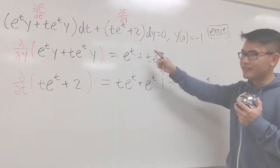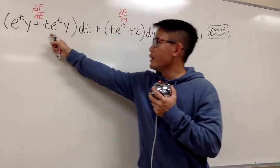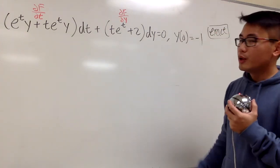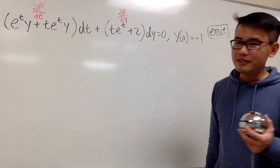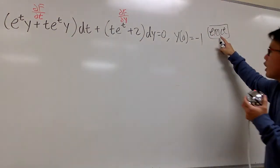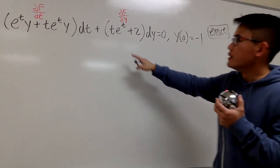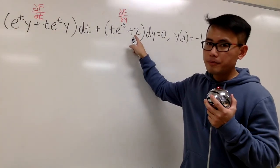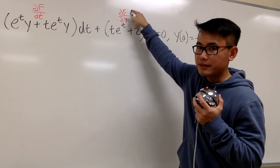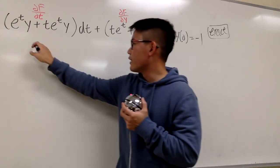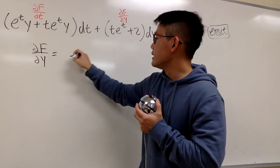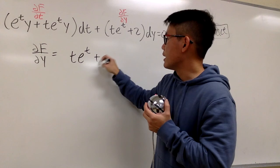Now let's go ahead and solve this. We can use either expression to begin with — use the shorter, easier one. Since we know this is exact, the second expression represents the partial of F with respect to Y. So: partial of F with respect to Y equals T e to the T plus 2.